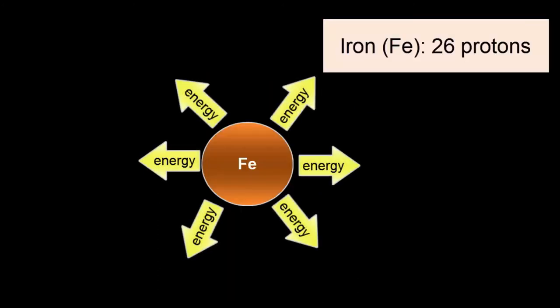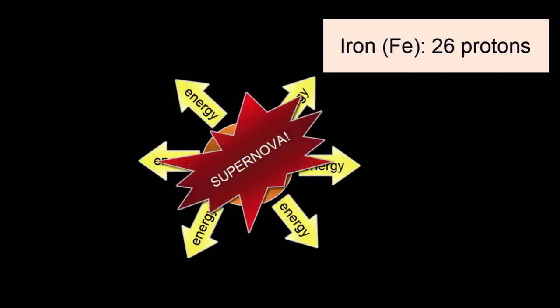By the time fusion produces iron, 26 protons, so much energy is produced within the center of a star that it can no longer be contained, and the star explodes in a supernova.